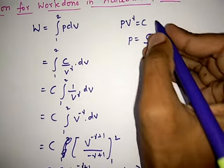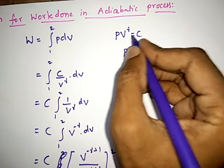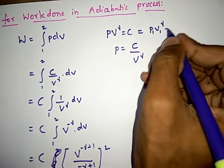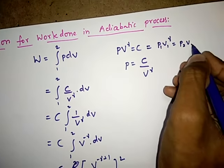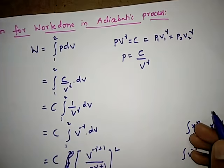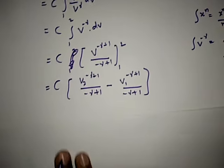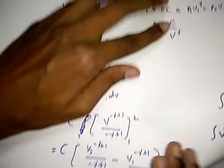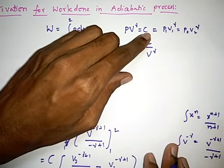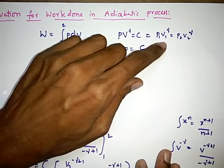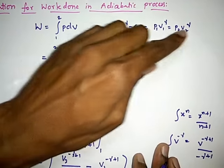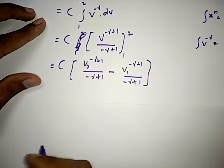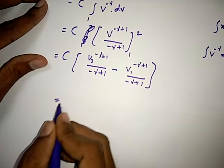Now, PV to the power gamma equals constant, so we can write P1 V1 to the power of gamma equals P2 V2 to the power of gamma. In the place of the constant C, I can write P1 V1 to the power of gamma, and also in the place of C I can write P2 V2 to the power of gamma.